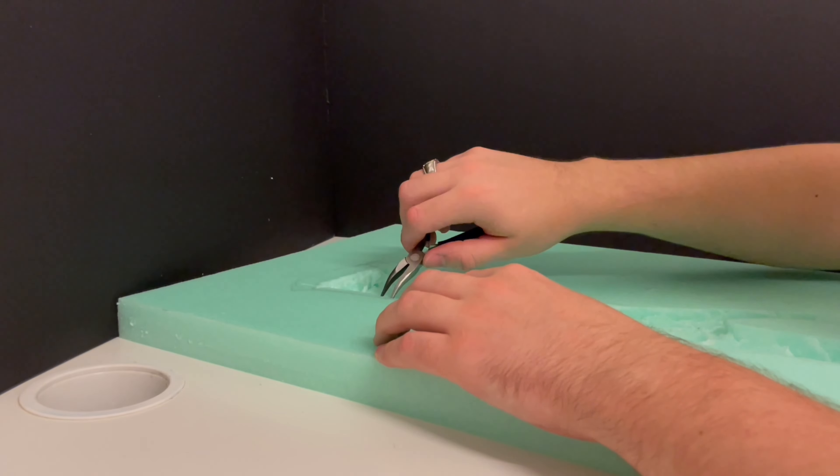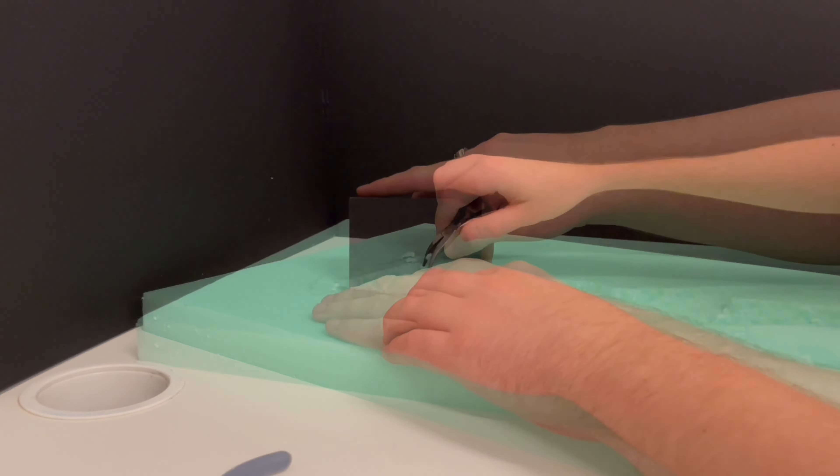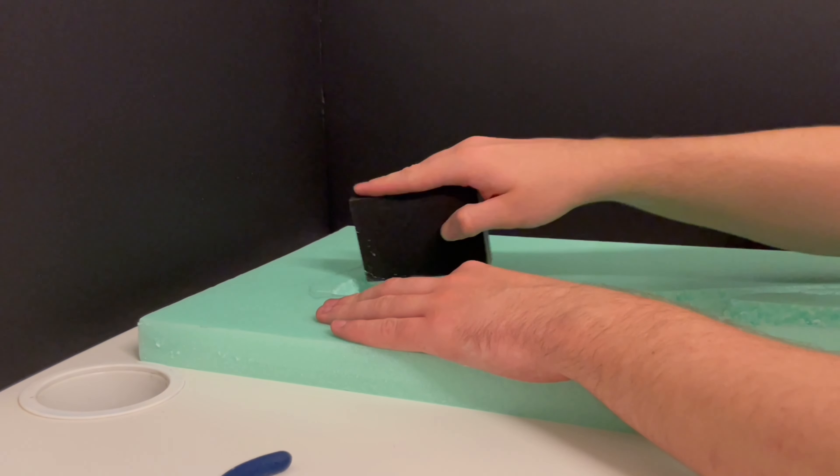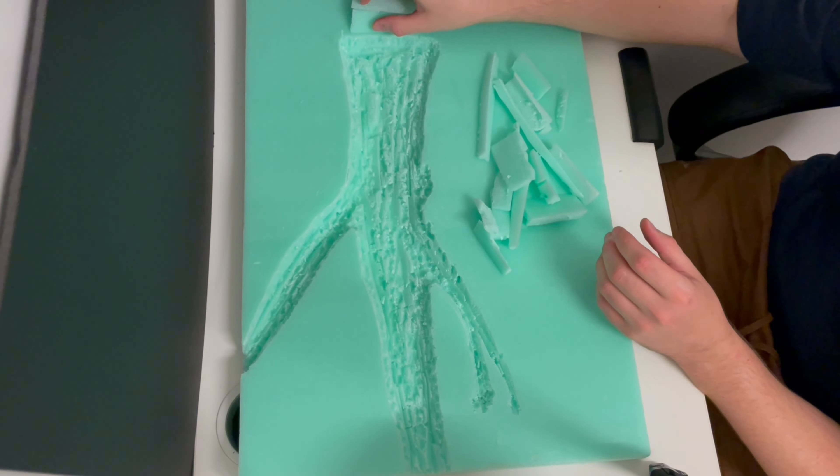Next I use a pair of pliers to just remove pieces from along the edge to make it look more rough and natural. And then I just sand out all the coarse pieces.